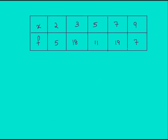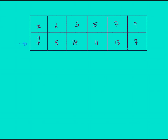Let's take a frequency distribution for mode. The idea remains the same: identify the value with the highest frequency. Looking at the frequencies, the highest is 19, which corresponds to data value 7, so the mode is 7. In another example, there are two values with the highest frequency of 18, corresponding to values 3 and 7. So this set has two modes: 3 and 7.